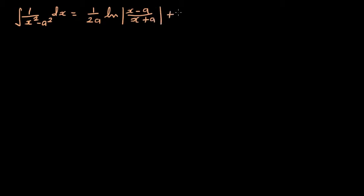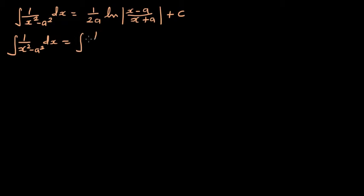This is a good formula to remember because if you know this formula it is very helpful to do some polynomial integration. So let's prove this. The integration of 1 over x squared minus a squared dx can be written as the integration of 1 over x minus a times x plus a dx, using difference of two squares.